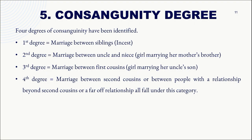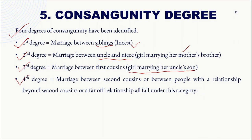There are four degrees of consanguinity. First degree is marriage between siblings — called incest and not practiced anywhere. Second degree is marriage between uncle and niece, i.e., a girl marrying her mother's brother. Third degree is marriage between first cousins — a girl marrying her uncle's son or aunt's son. Fourth degree is marriage between second cousins or those with relationships beyond second cousins, i.e., a far-off relationship.